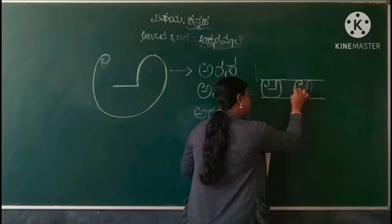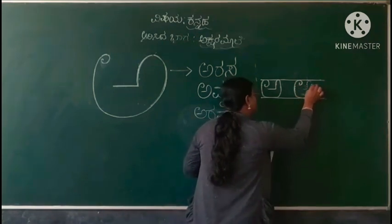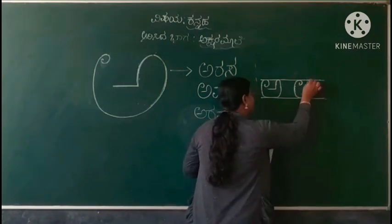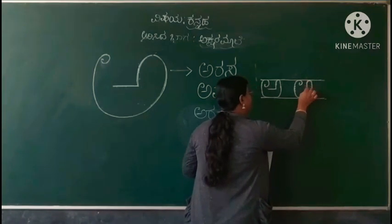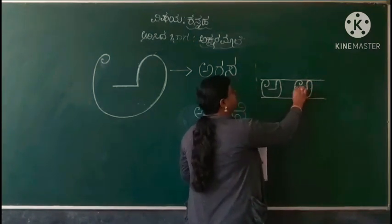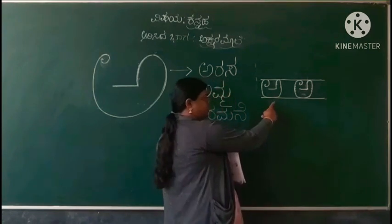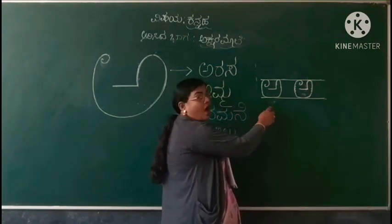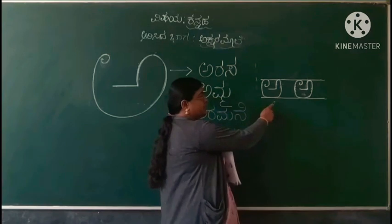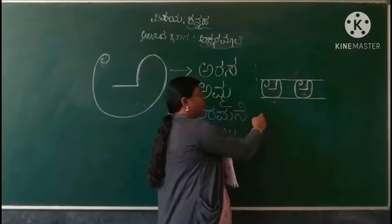Draw a downward sunny curve, come to this point, take the U-turn again, and now draw a sleeping line. What is this? This is the letter A.